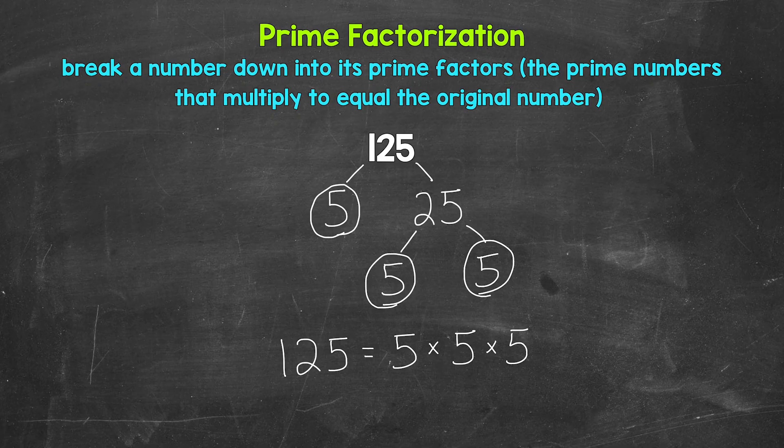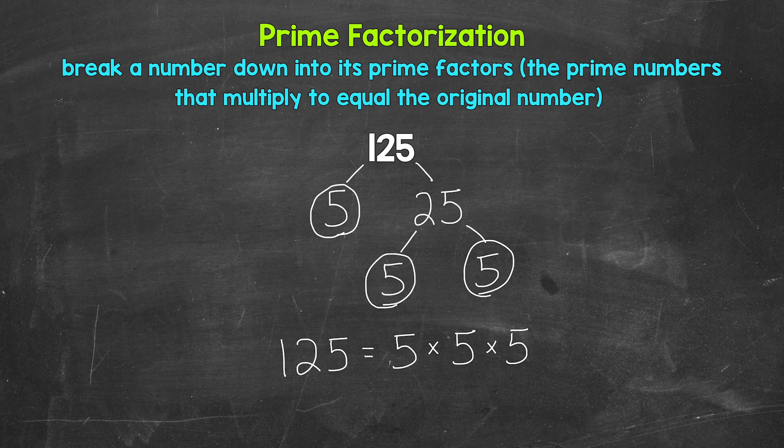If we have the correct prime numbers, they will multiply to equal our original number. So let's check. 5 times 5 is 25 times 5 is 125. So we are correct here. So there you have it. There's the prime factorization of 125.